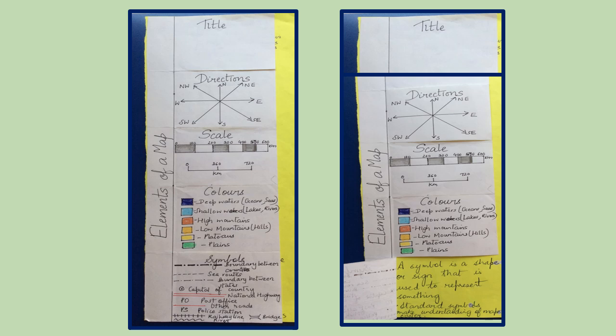Then we have a railway line with a straight line and parallel vertical lines. For a bridge, we have two parallel lines. And a zigzag formation for a river.